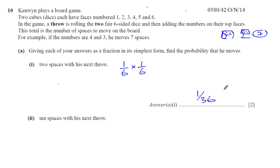So that's the probability that for the next throw, he's going to be only moving two spaces, because the only way he can get that is if there's a one on the first dice and a one on the second dice. There's only one way of getting a total of two, which is getting a one on each dice.